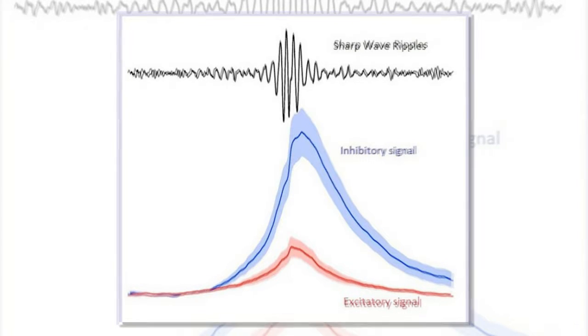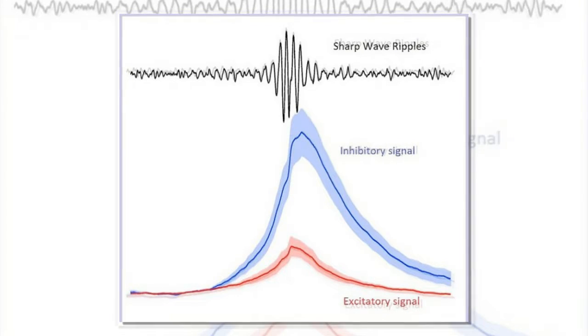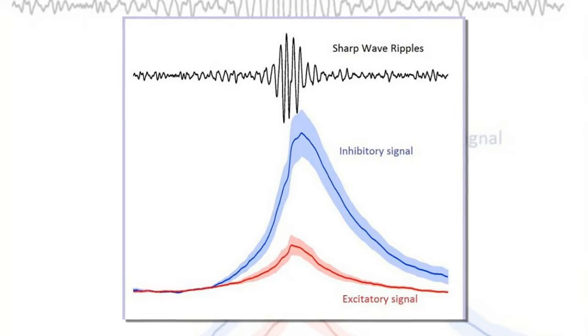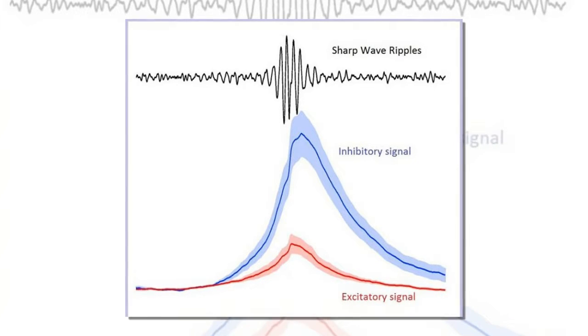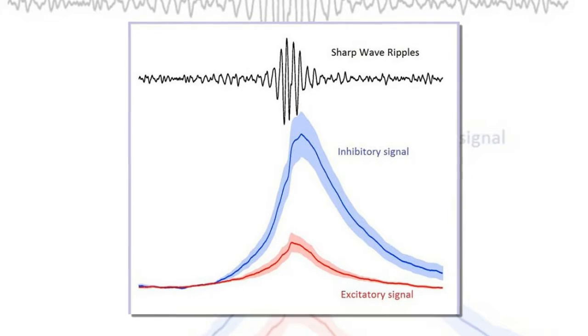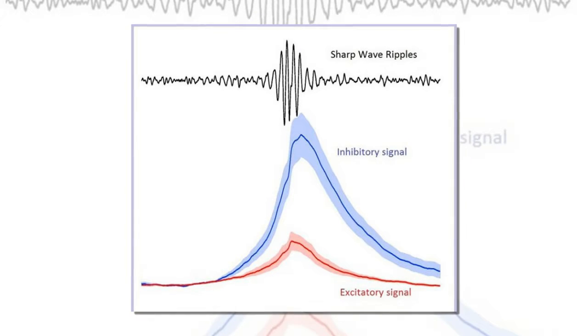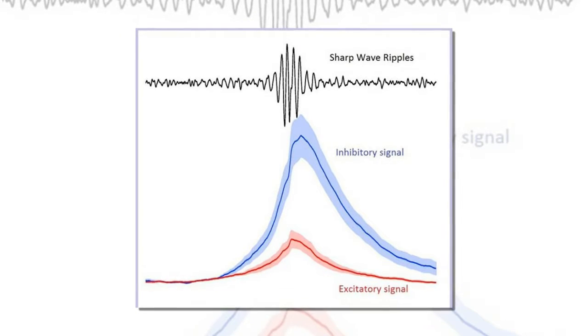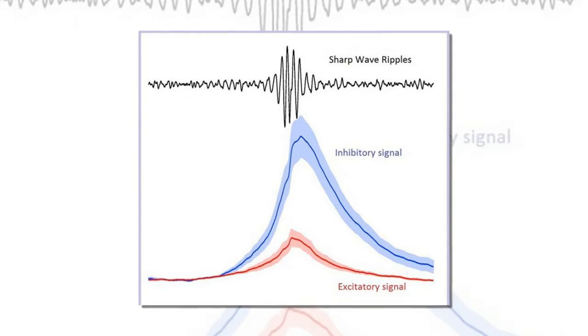For this study, the team set out to identify whether ripples are caused by temporal modulation of excitation or of inhibition at connecting points in brain cells or synapses. The researchers monitored 17 mice while they were fully awake, groomed themselves and moved around like normal mice do.